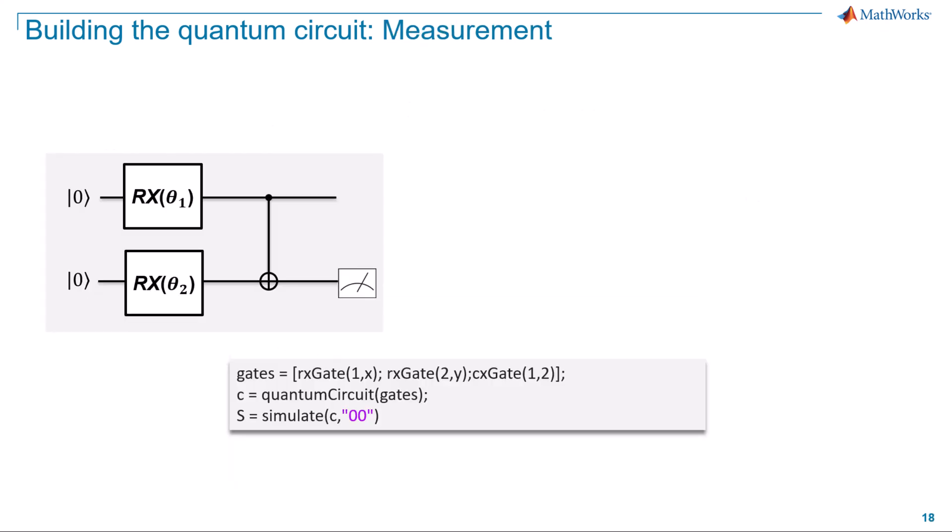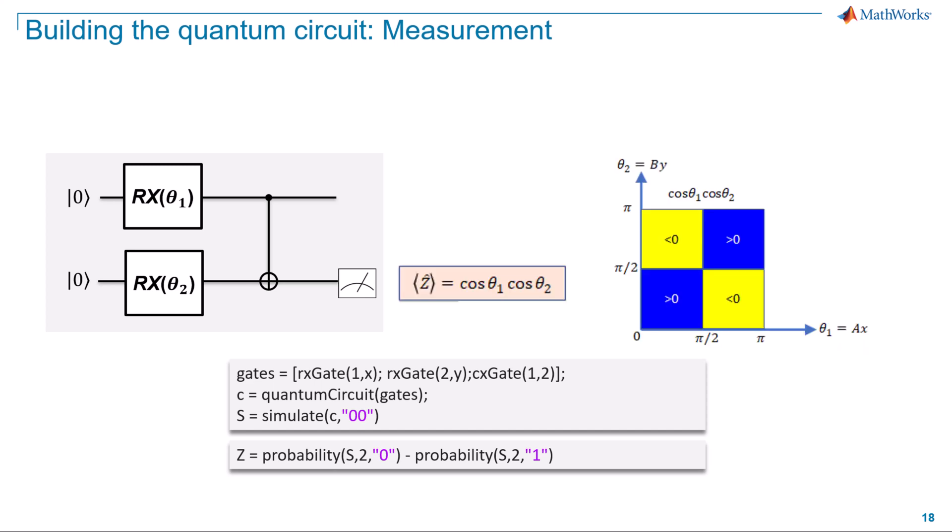The next operation on this circuit is to perform a measurement on the second qubit. This quantity gives us the difference in counts of the qubit being in the state 0 and the 1 state. For this quantum circuit, the measured quantity expectation Z has a predicted form of cos theta1 times cos theta2 based on the states of the qubits.